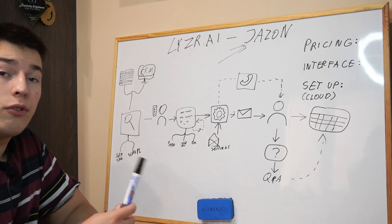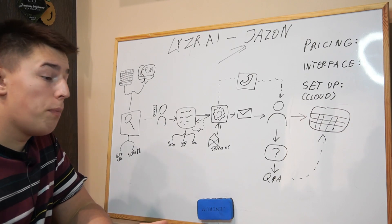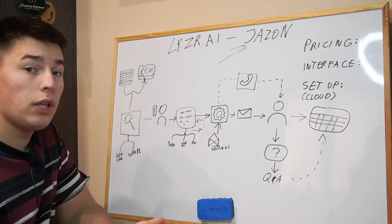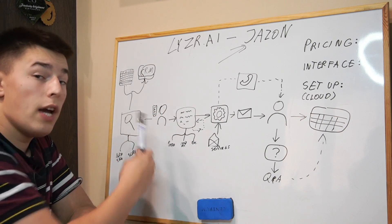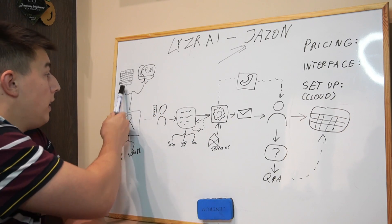Once you do that, you pick whatever you want. You either upload leads from the CRM or from a lead list — CSV, whatever.